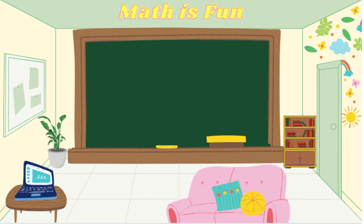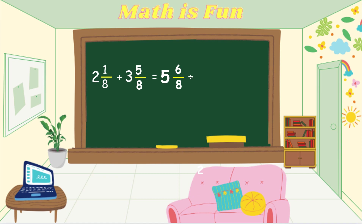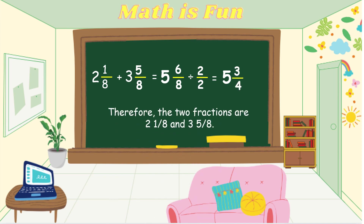We verify by adding the two fractions: 2 and 1 eighth plus 3 and 5 eighths. Whole numbers: 2 plus 3 equals 5. Fractions: 1 eighth plus 5 eighths equals 6 eighths. Reduced: 6 eighths divided by 2 over 2 equals 3 fourths. So the sum is 5 and 3 fourths, which confirms our answer. Therefore, the two fractions are 2 and 1 eighth and 3 and 5 eighths.